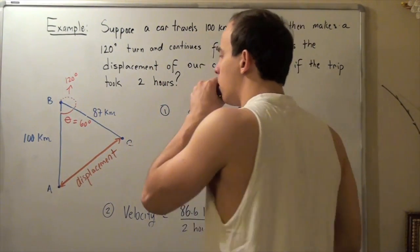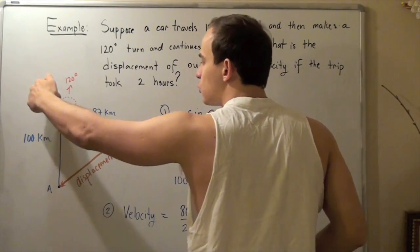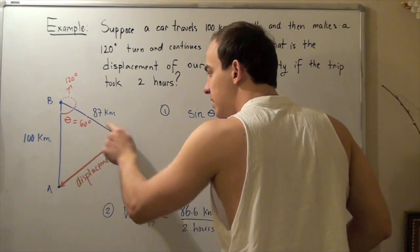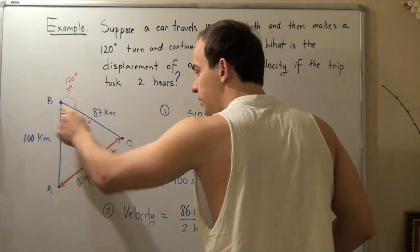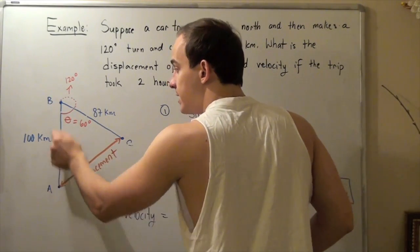Then it made a 120 degree turn and traveled 87 kilometers. This length is 87. So from point B to point C, it's 87 and from point A to point B, it's 100.